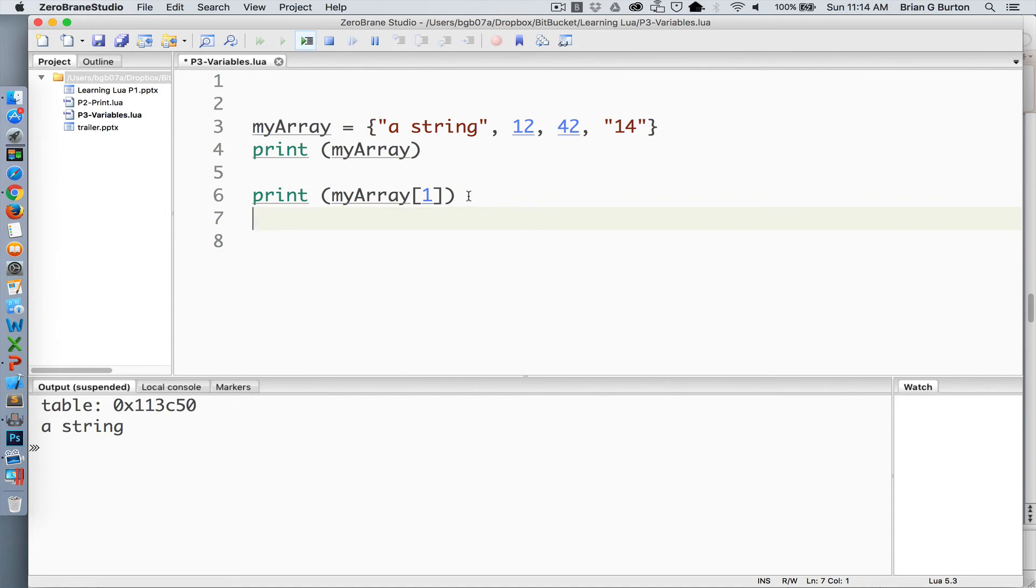The easiest way to get your data back out of the array is that you can directly index the object type. So in this case, if I wanted to list the first object, which is a string, I can just simply in brackets place one and that will return the first object in the array. It should be noted that arrays start counting at the value of one. Many programming languages start at zero. In Lua, we start at one. So my array index one will return string just as my array index four will return the value of 14. And my array index two will return the value of 12.